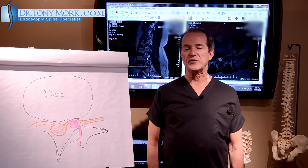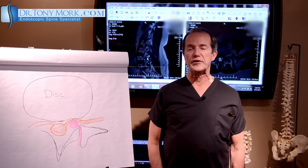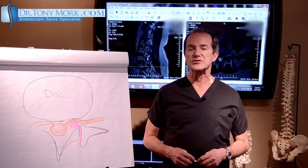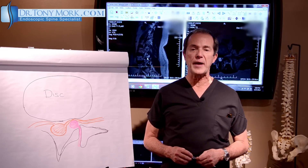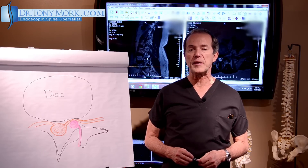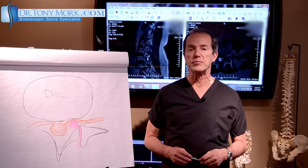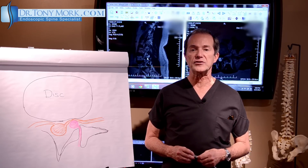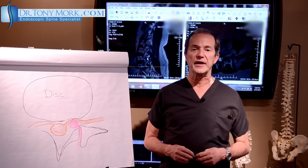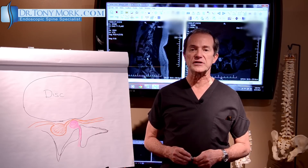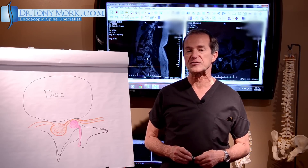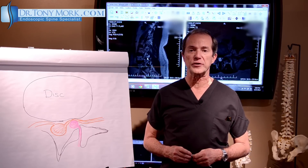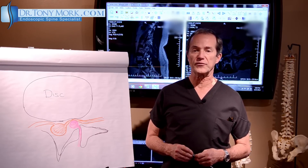The best way to identify a synovial cyst is with an MRI scan, but it's also important to get flexion-extension views of the back to see how much motion may be accompanying this particular problem. The motion may have spawned the degenerative changes in the facet joint and, in some cases, this excessive motion causes the fluid buildup inside the facet joints which results in the synovial cyst.